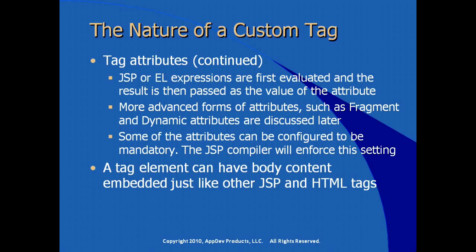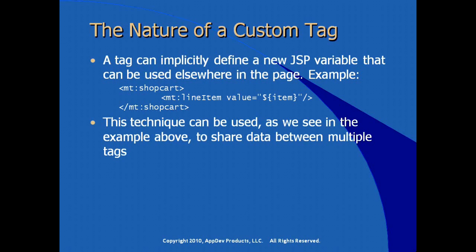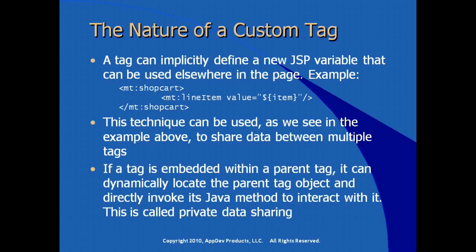A tag element can have body content embedded just like other JSP and HTML tags. A tag can implicitly define a new JSP variable that could be used repeatedly within the page. For example, here we see the use of two custom tags — a shop cart tag and a line item tag. The line item tag is being used as the body content of our shop cart tag. This technique can be used to share data between multiple tags.